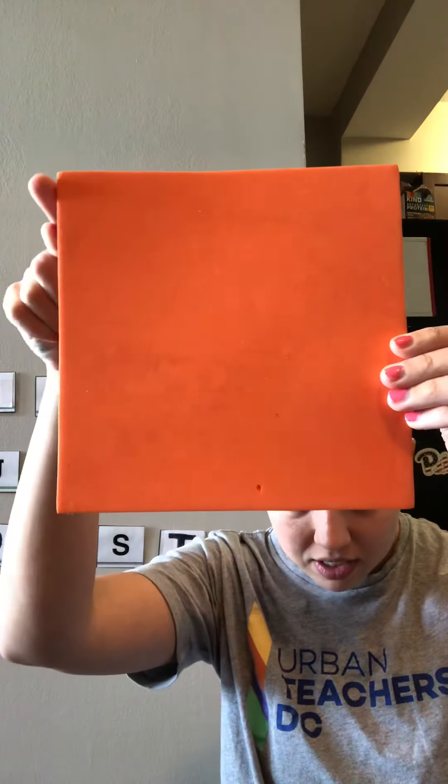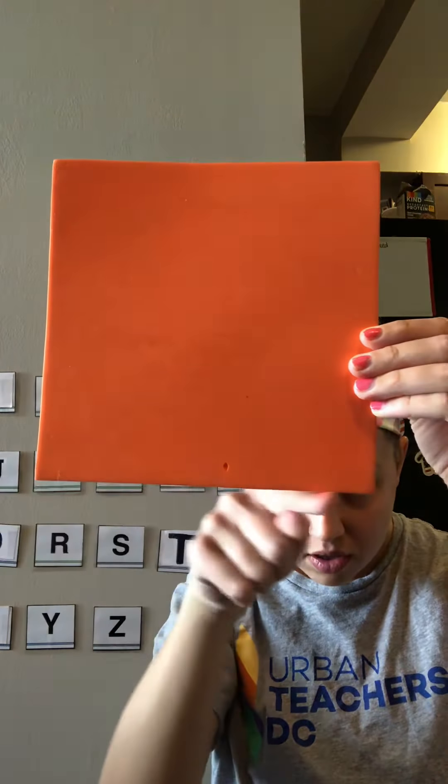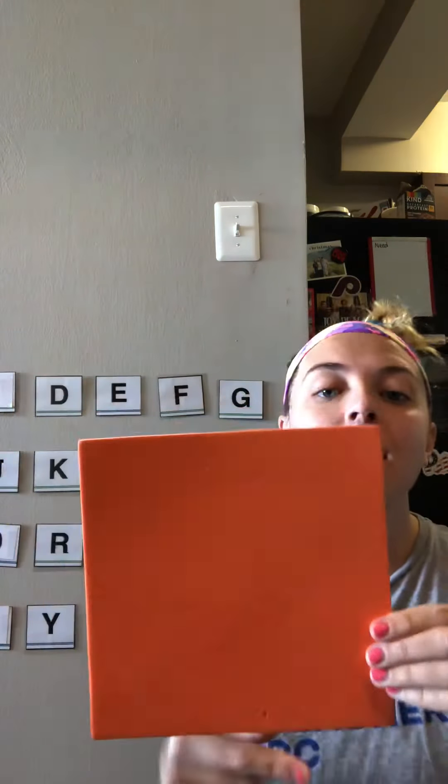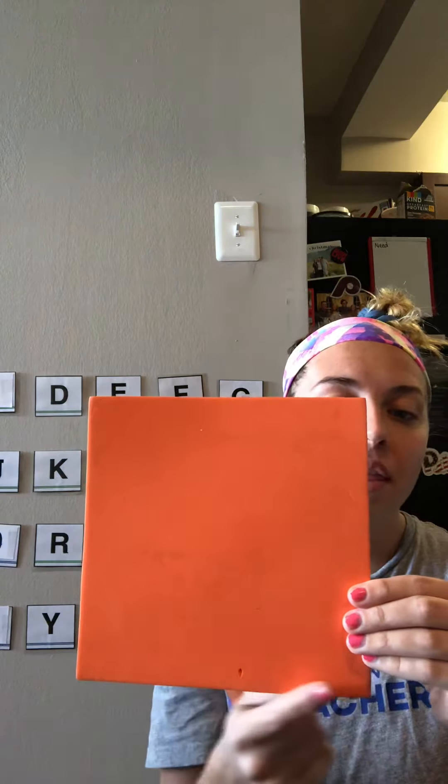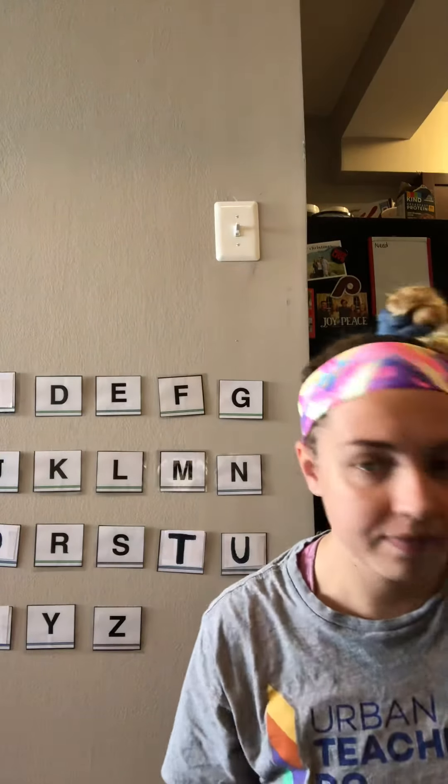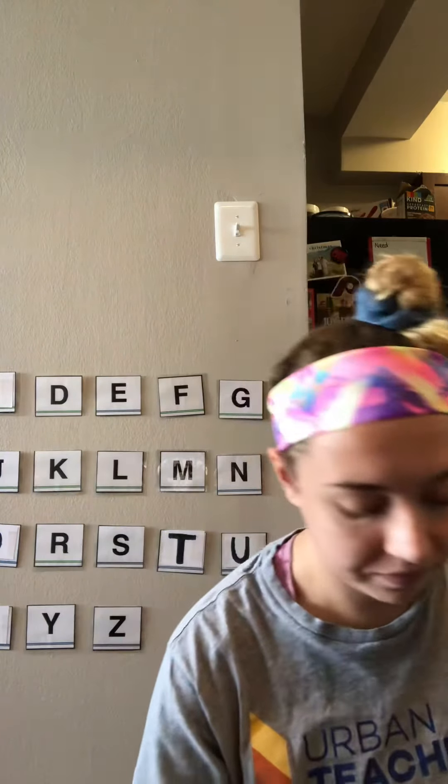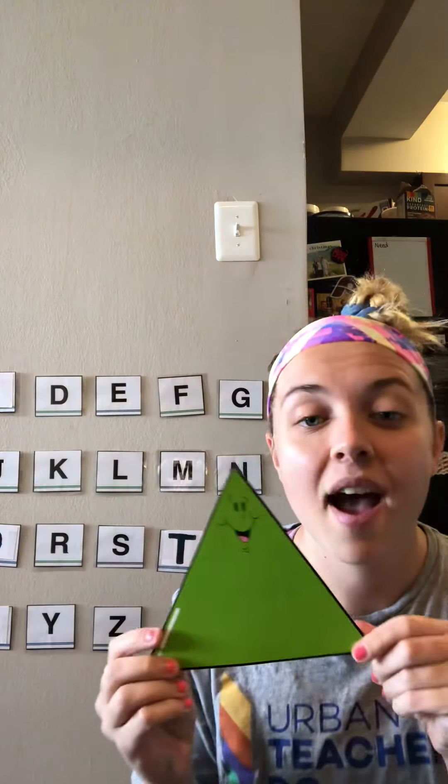And next, I have this big orange shape. It has one, two, three, four sides that are the same length. What shape is this? This is a square. So we have a square, a rectangle, a triangle, and a circle.